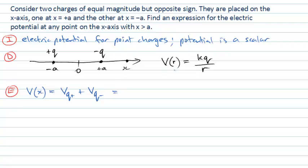And in this case that will be for the positive charge, it will be k times plus q divided by the distance between our location x and that positive charge. You can see provided x sits out here larger than plus a, that distance will be simply x minus a.